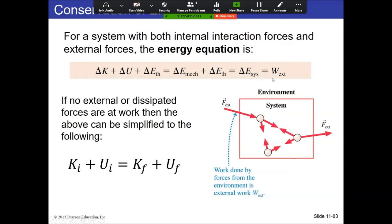When we combine the mechanical energy and the thermal energy, that's the total change in system energy. That equals zero if we have an isolated system. If we don't have an isolated system, it equals the external work — meaning if work is done on the system, it increases its energy, delta E is positive. If the system does work on the environment, energy is removed, delta E is negative. This equation is all-encompassing.